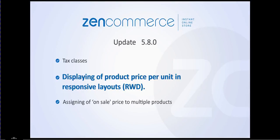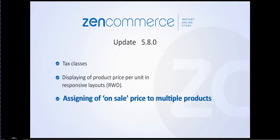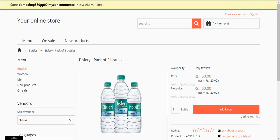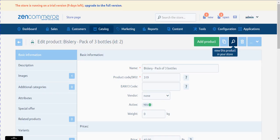Assigning of on-sale price to multiple products. Now we can assign on-sale price together to multiple products rather than assigning one by one to each product. We can also allot start and end dates of the promotion. To make best use of this feature, let's go to the admin area and then go to Catalog Products.